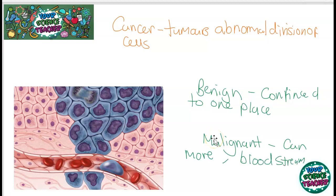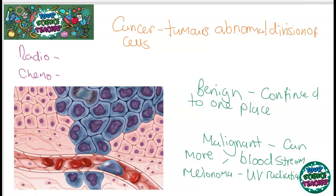A specific type of malignant tumour is a melanoma, which accounts for 2,000 deaths in the UK each year. They are quite easily avoided as they are usually caused by exposure to UV radiation — basically staying in the sun too long. That's why it's so important that you wear sunscreen when you go outside.